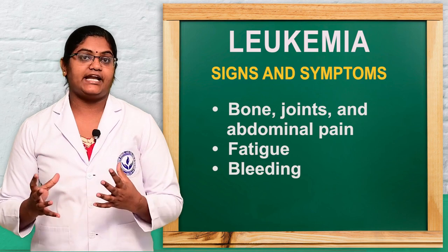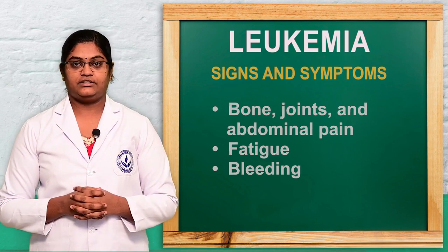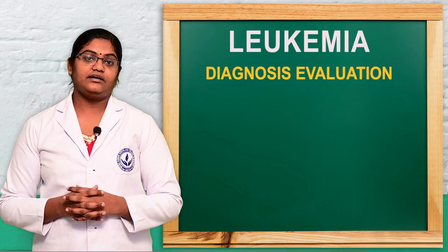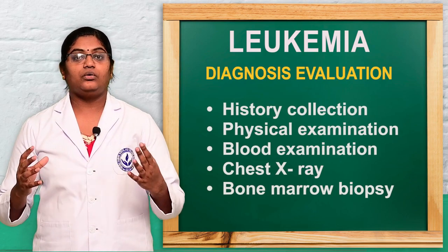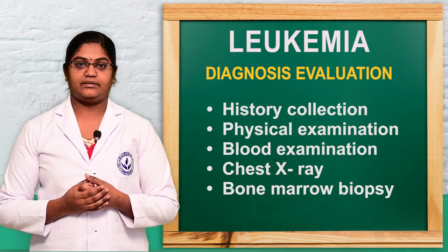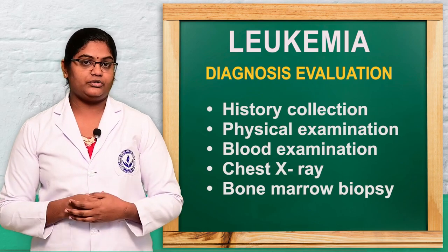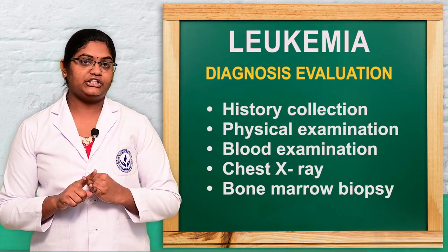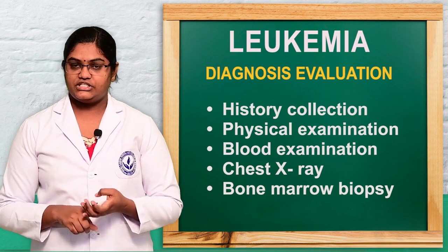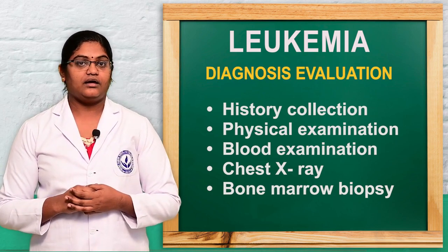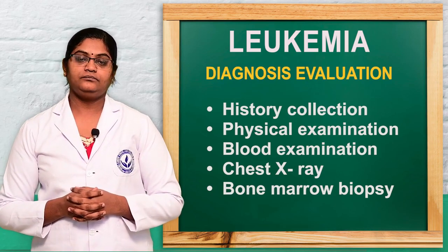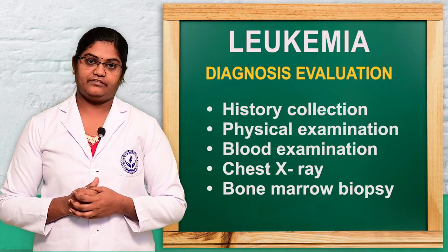Let's see what diagnostic evaluations we can do for leukemia. As with all disease conditions, we first prioritize history collection and physical examination. We also perform a CBC or complete blood test, a chest X-ray to check for any chest or lung infections, and a bone marrow biopsy. These are the important diagnostic evaluations.